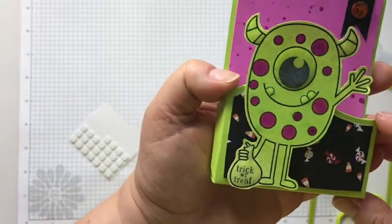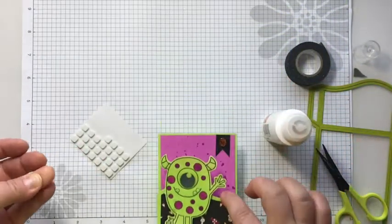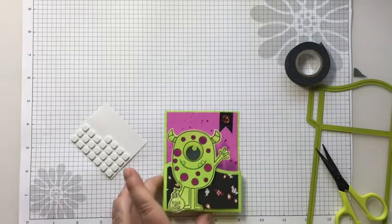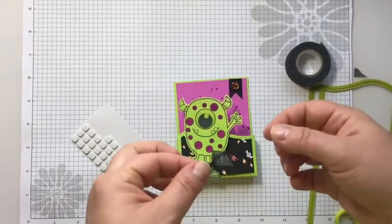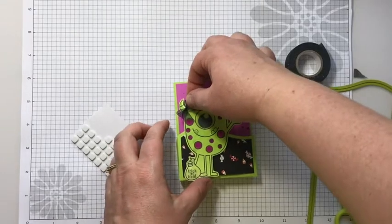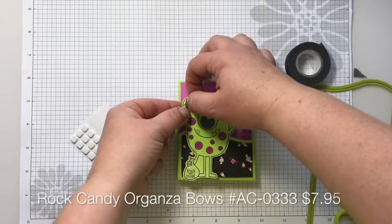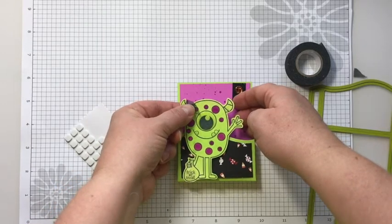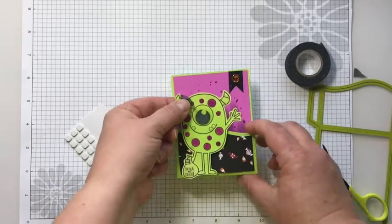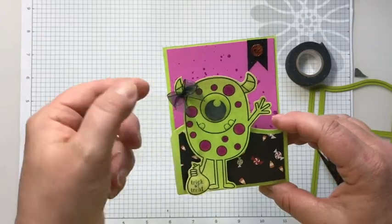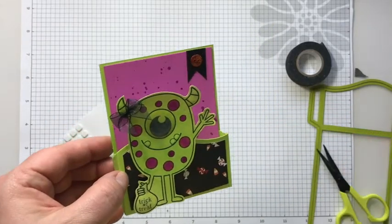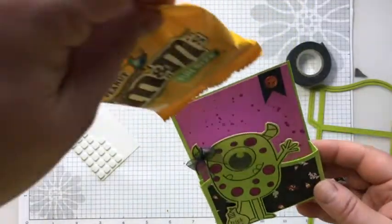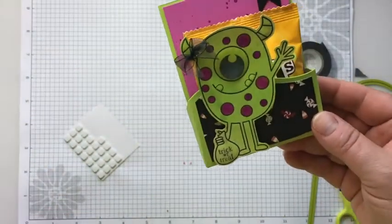Now I decided I didn't really want my little monster to be a boy. I wanted it to be a girl. So I have some of our Rock Candy Organza bows. I'm just going to lay right on the horn while the Journey Glaze is wet. And that bow will stick there amazingly well. And then we just add a treat to that. And it's ready to go.